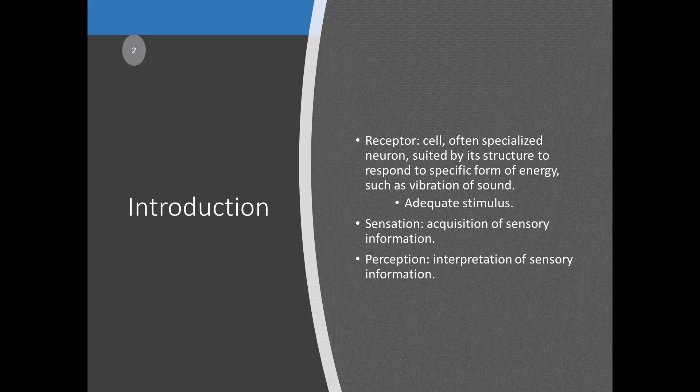Many consider hearing and vision the two most important senses — I would agree with that because hearing and vision allow us to navigate and interact with the world. Two terms to clarify here are sensation and perception. Sensation is simply the acquisition of sensory information; you might have the sensation of sound or light hitting your retina. Perception is the interpretation of sensory information — always keep these two separate.